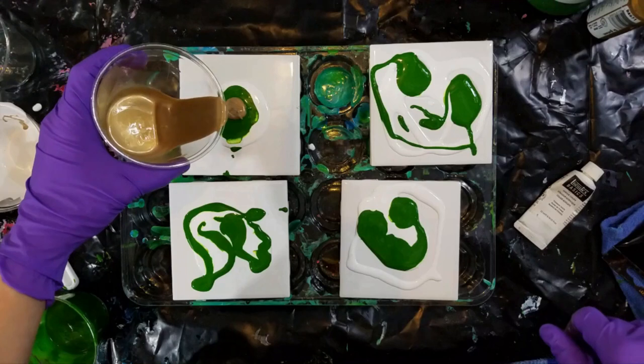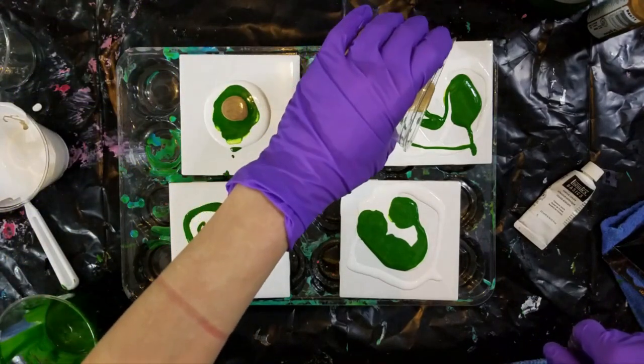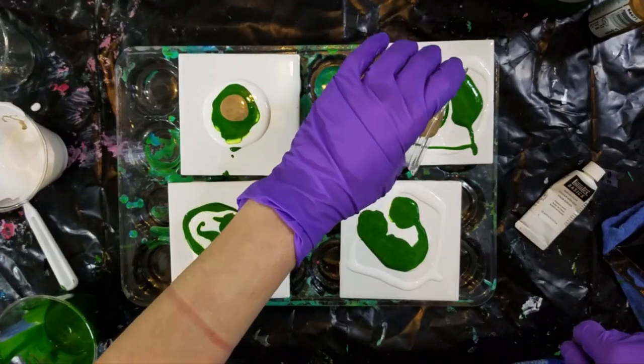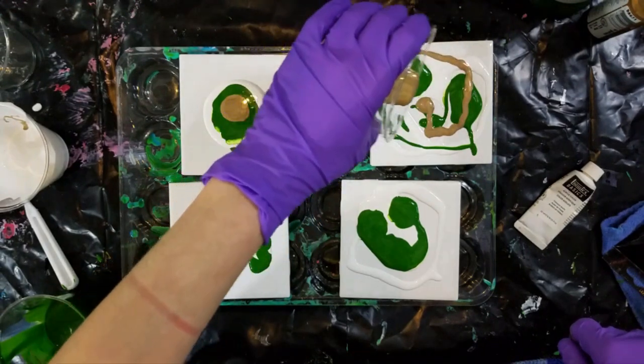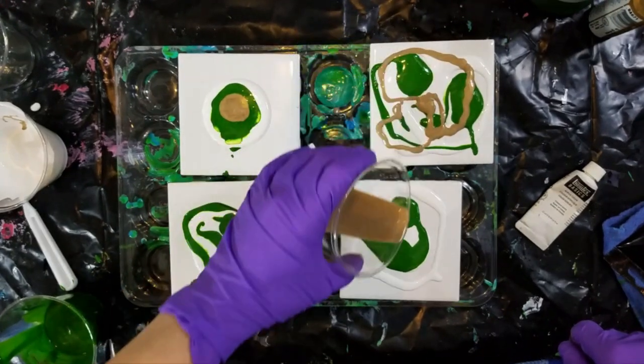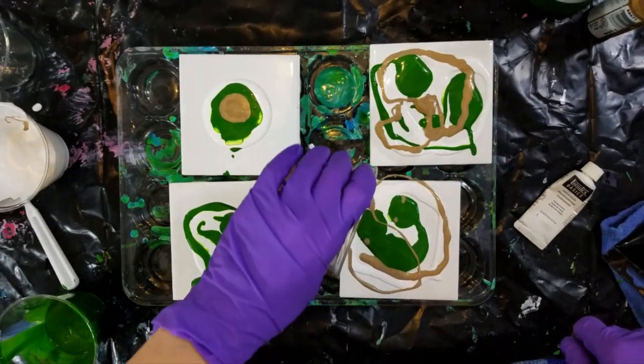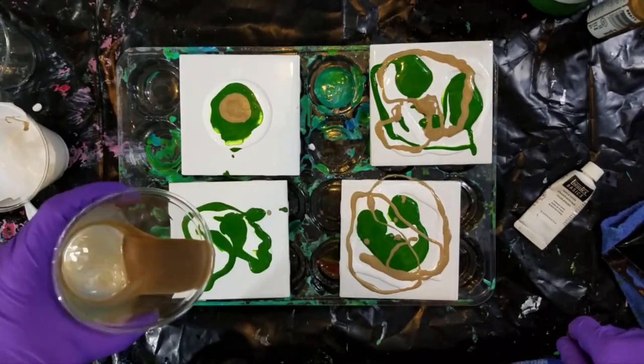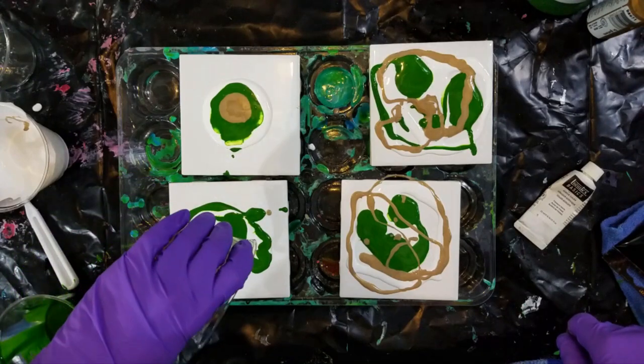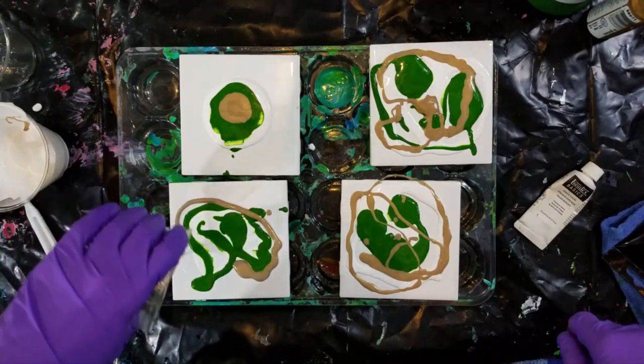Now I'm going to be adding my gold and this actually was really easy to pour because it was a thinner paint to begin with. This was my first time using enamel but I didn't have any gold acrylic paint so I decided to just try this enamel paint and it worked really well.